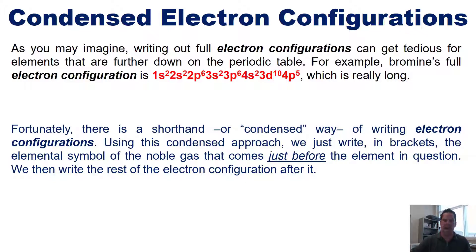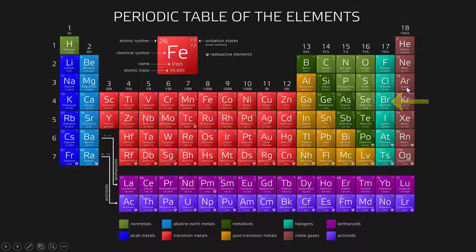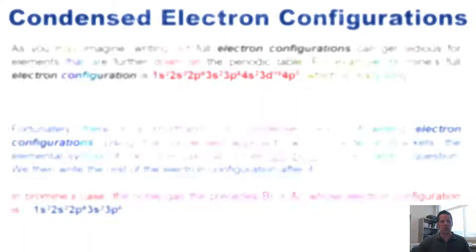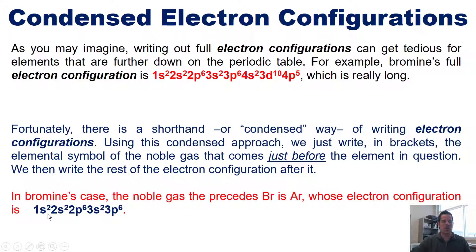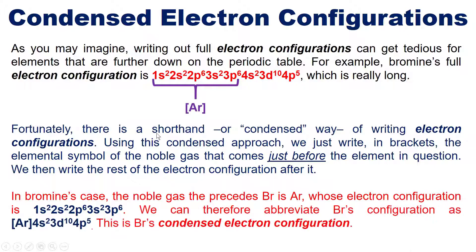Using the condensed approach, we write in brackets the elemental symbol of the noble gas that comes just before the element in question, then write the rest of the configuration after it. In bromine's case, the noble gas that precedes it is argon, whose configuration is 1s2 2s2 2p6 3s2 3p6. We replace that part with [Ar] and keep the rest, giving bromine's condensed configuration as [Ar] 4s2 3d10 4p5.